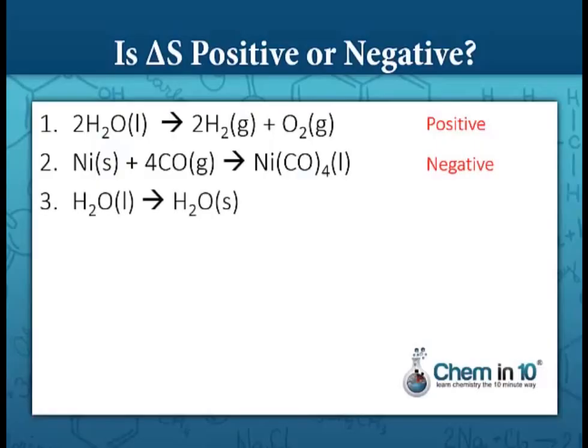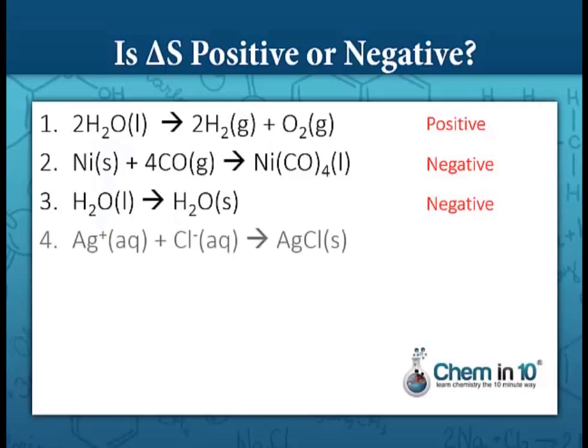Going from liquid water to solid water — we're freezing water — the entropy has to be decreasing because we're going from liquid to solid, so entropy is negative. Here we have silver ion plus chloride ion coming together to form the precipitate silver chloride. Since two particles come together into a solid, entropy is negative.